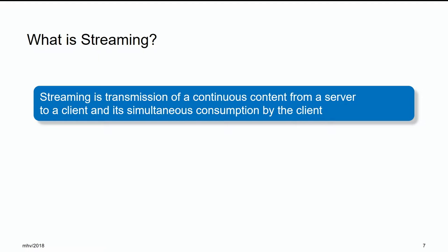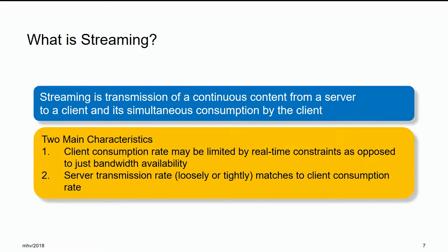As people changed their viewing patterns, progressive download wasn't really that efficient anymore, so we had to come up with better protocols. Streaming means it's a transmission of continuous content — audio-video files — from a server to a client, with simultaneous consumption by the client. This definition implies two main characteristics: the consumption rate is going to be limited by real-time constraints, and the server transmission rate is going to be coupled to the client consumption rate. You cannot overflow or underflow the client buffer — you want to keep a healthy buffer status.